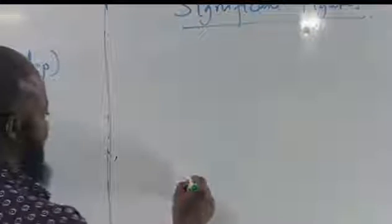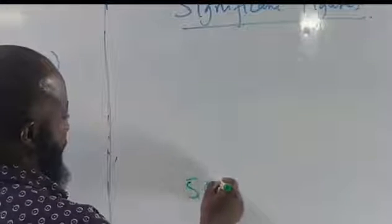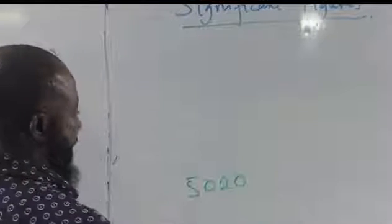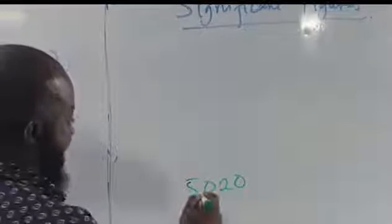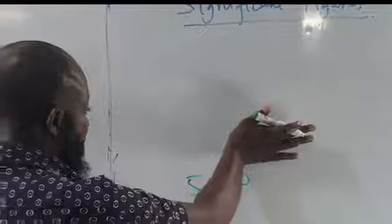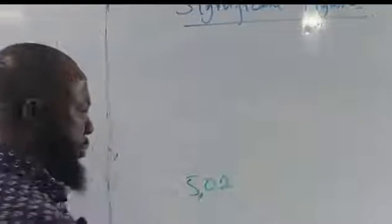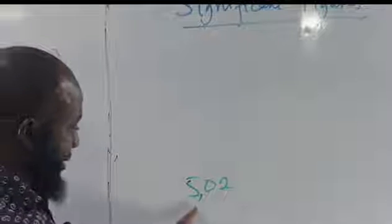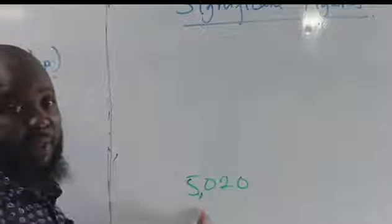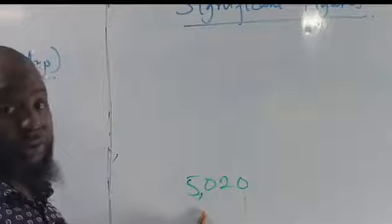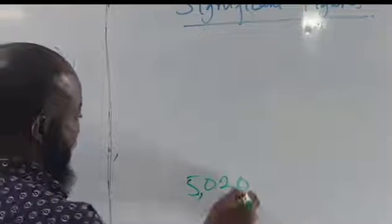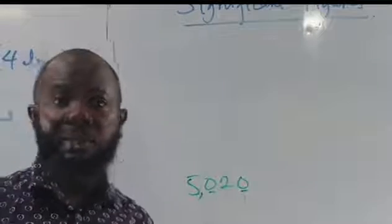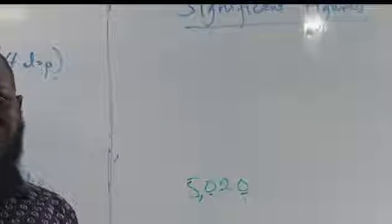For example, if we have 5020: this means 5,000 and 20. If I remove the 0 in the middle, the value of the number would be reduced, which is wrong. So that 0 is significant. However, there are particular cases where a 0 will be insignificant. There are some states where a 0 is not significant.